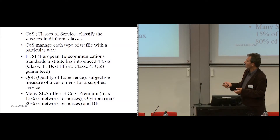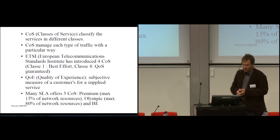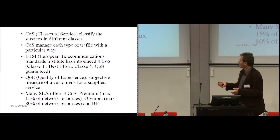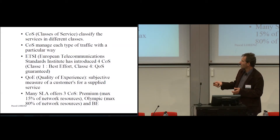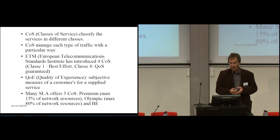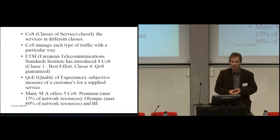Today, many service level agreements offered by providers offer three types of class of service: Premium, Olympic, and Best Effort. Premium uses about 15% of the network resource and offers very good quality, but it is very expensive. Olympic uses about 80% of the network resource. For Best Effort, the remaining 5% is used — there is no quality guarantee. If there is nobody in the network, you have very good quality, but if many people are connected, then the quality is very bad.